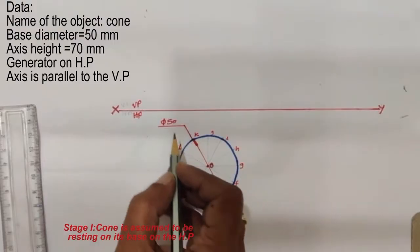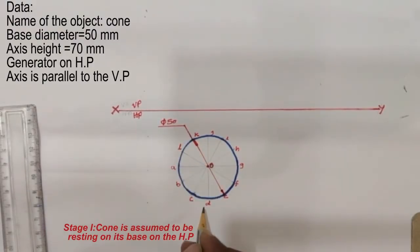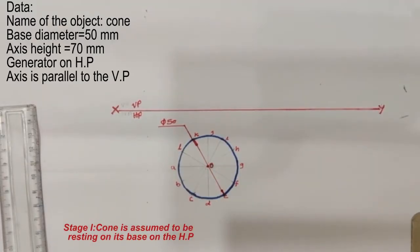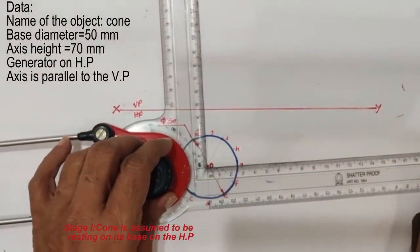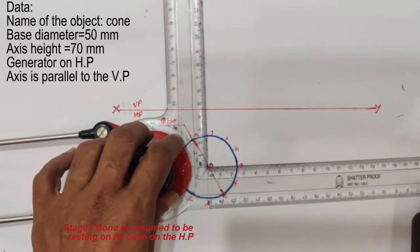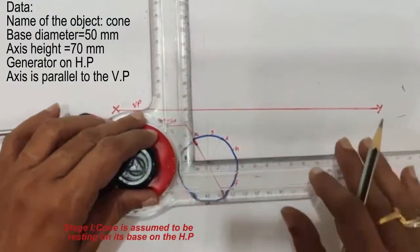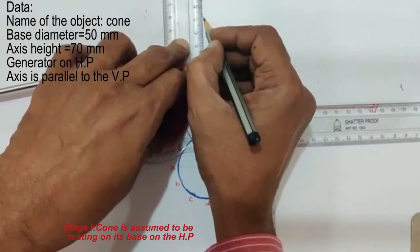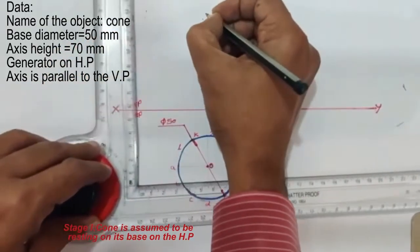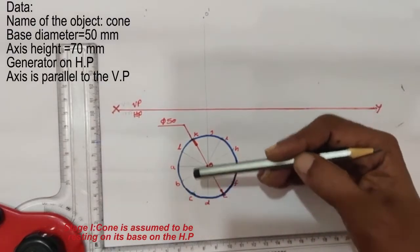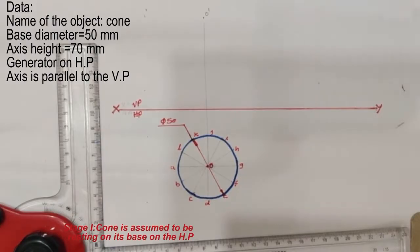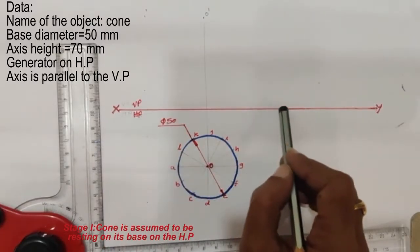The top view of the cone is a circle of diameter 50 mm. The division points on the circumference are named A, B, C, D, E, F, G, H, I, J, K, and L. After drawing the top view, project the related front view by drawing a projector through the center O towards the vertical plane. The axis height of the cone is 70 mm. Draw projectors passing through the division points A, B, C, D, etc. onto the XY line, as the cone is resting on its base on HP so its image in front view falls on the XY line.